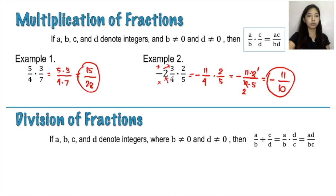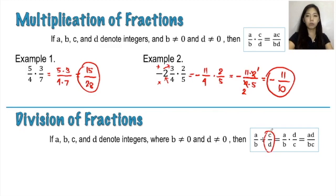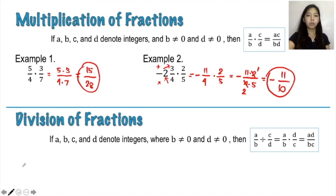Moving on, we have dividing fractions. If a, b, c, and d denote integers and both b and d are not equal to zero, then we have the general form for dividing fractions, which is a over b divided by c over d is equal to ad over bc. In dividing fractions, you have to first get the reciprocal of the divisor, so c over d becomes d over c, and from division it becomes multiplication. In short, get the reciprocal of the divisor and proceed to the rule in multiplying fractions.